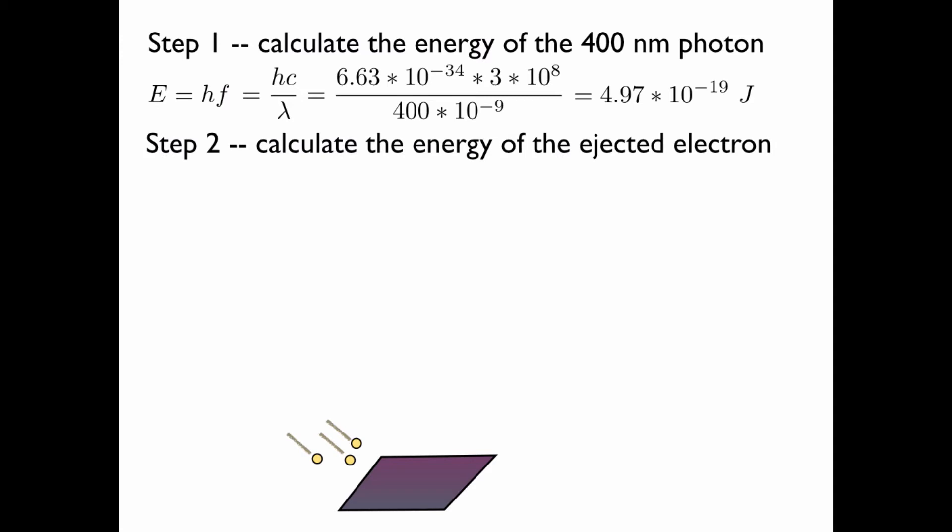Now let's calculate the energy of the ejected electron. The work function, the energy needed to release the photoelectron, has this value. It was given to us in electron volts. An electron volt is a unit of energy. It's the amount of kinetic energy that an electron would have if it's accelerated by one volt potential difference. We want to convert this to joules to compare it to the above result. This is the conversion factor, and this is the energy in joules.